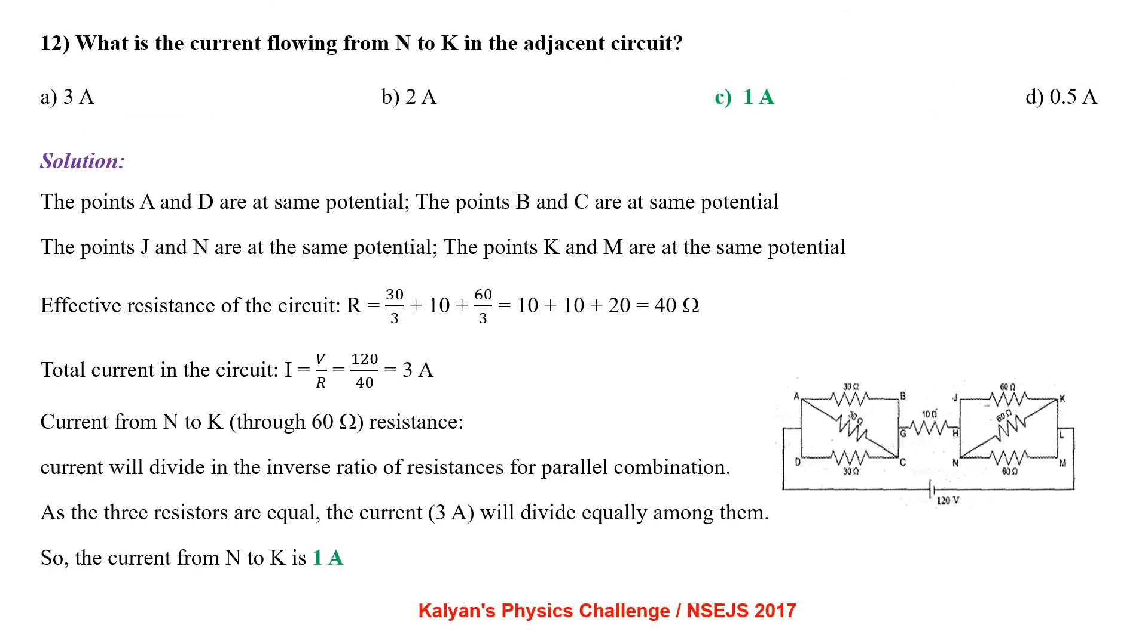What is the current flowing from N to K in the adjacent circuit? Take some time to see the circuit carefully. The points A and D are at same potential. So are the points B and C. G and N and K and M are also at the same potential.